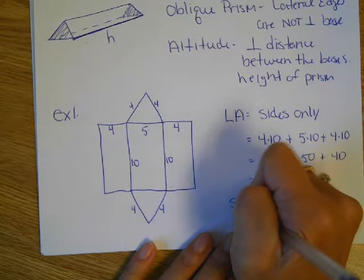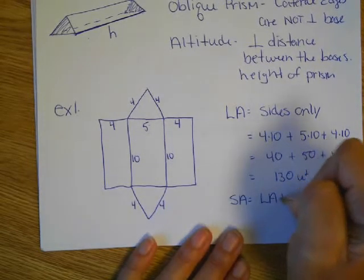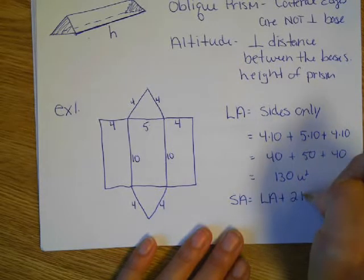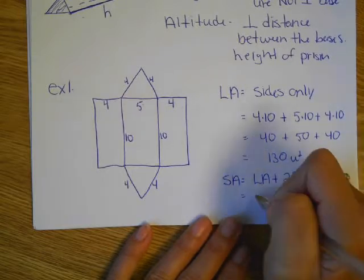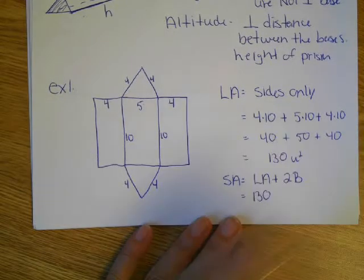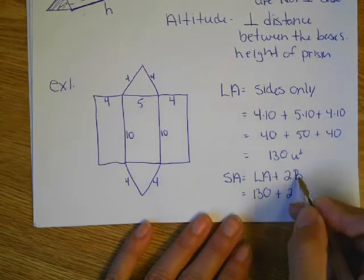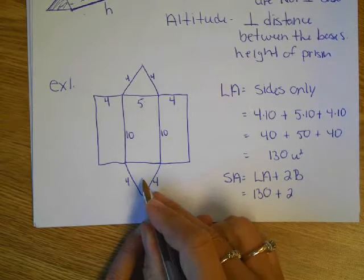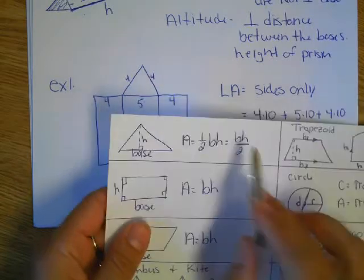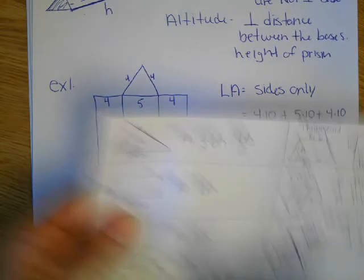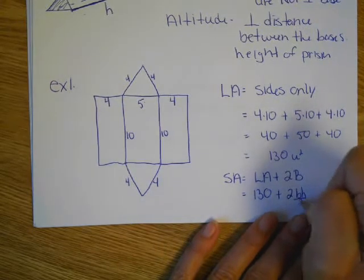Surface area is all of the lateral area, plus now we have to add on two bases. And those bases are the triangles. Well, the lateral area we've already done, 130. I'll just substitute that in. I don't have to recalculate that again. Plus, I've got two, in this case my base is a triangle. And if you look on your sheet, the triangle, base times height divided by two. So I'll just go bh divided by two.